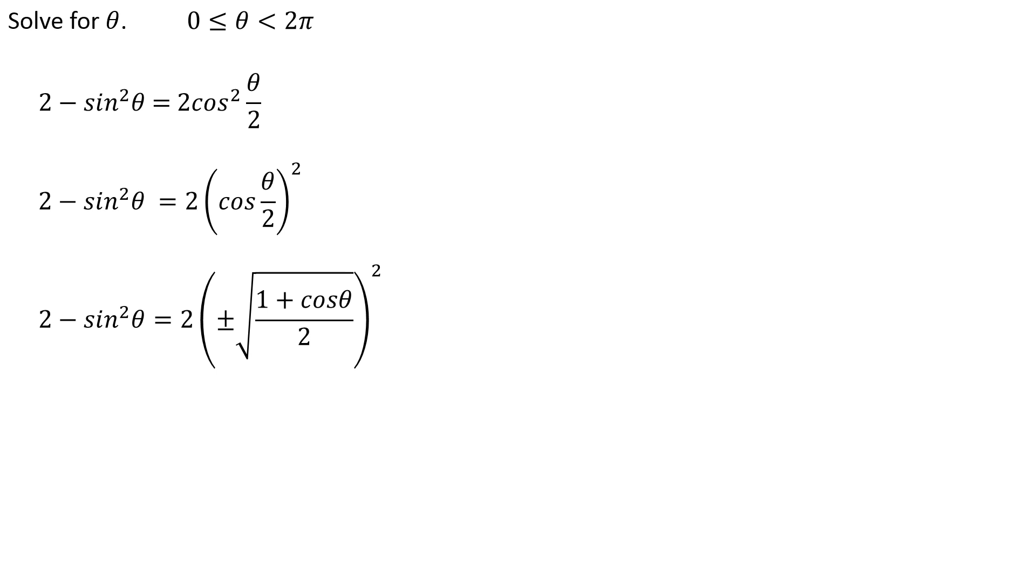Of course, cosine of θ over 2. Well, because I don't know what quadrant we're in, I've got to use the plus or minus symbol. Square root of 1 plus cosine θ all over 2.